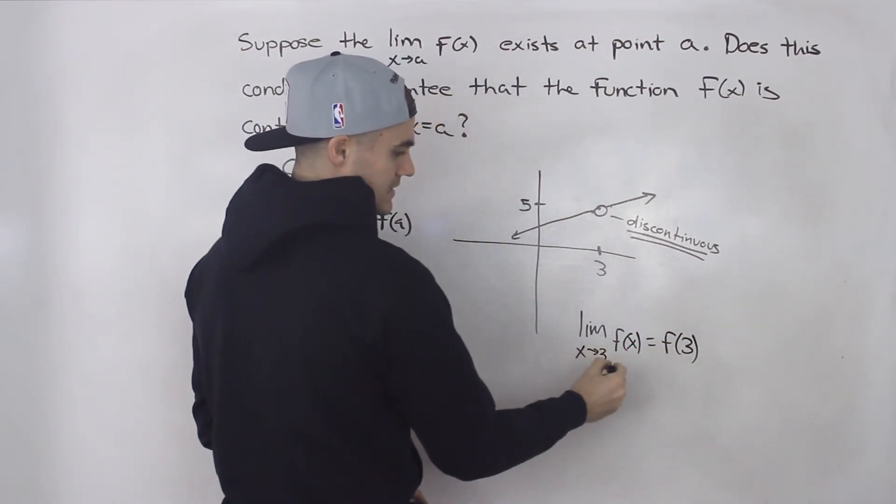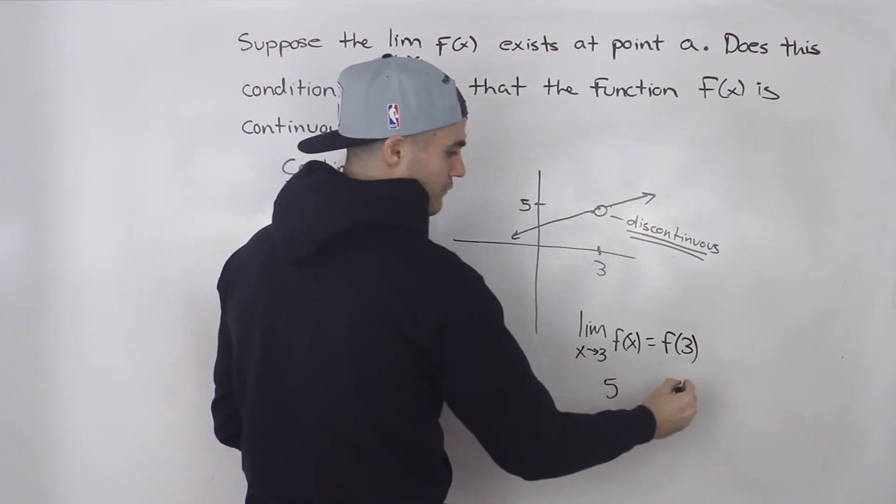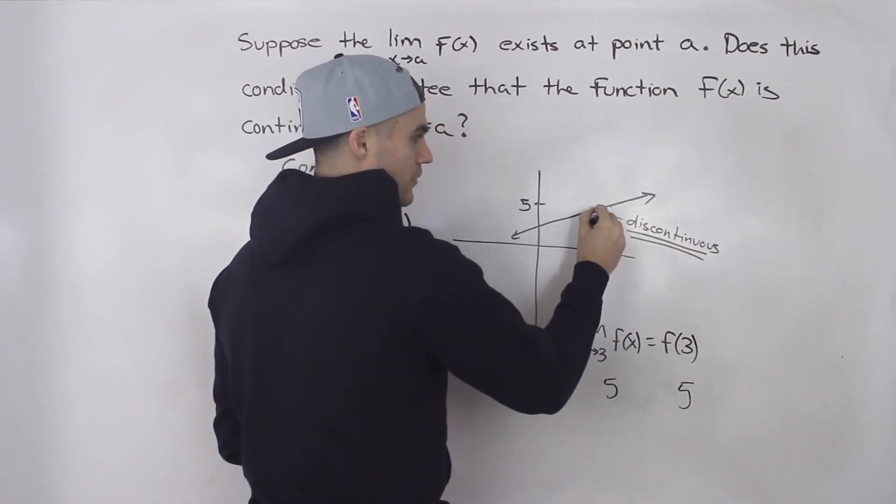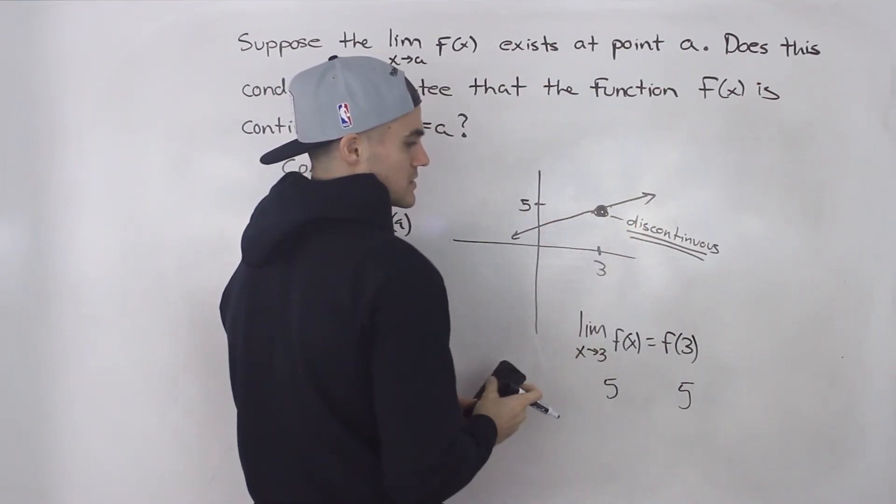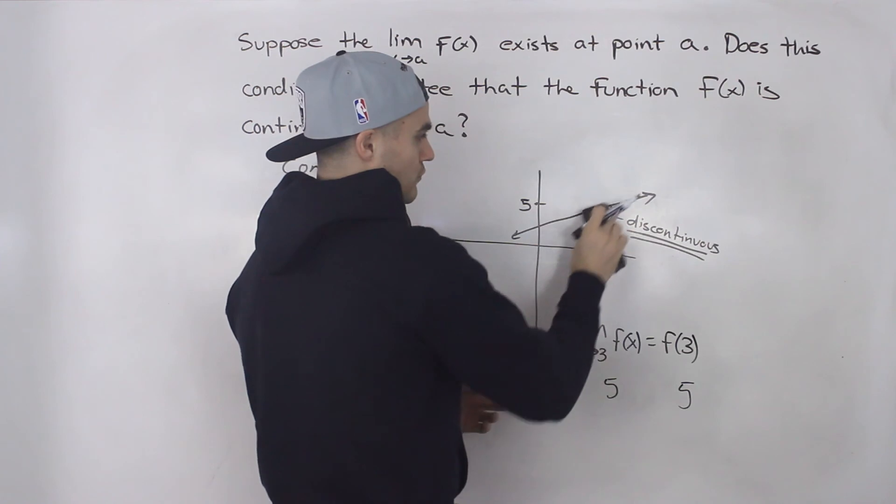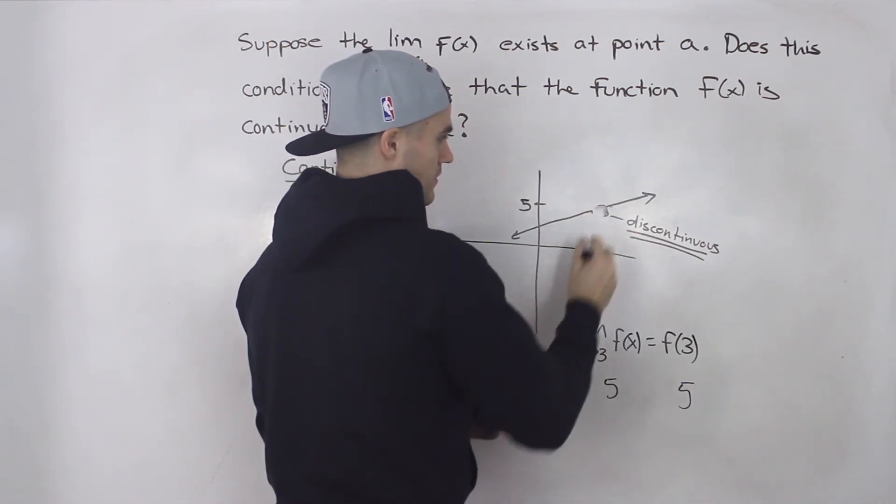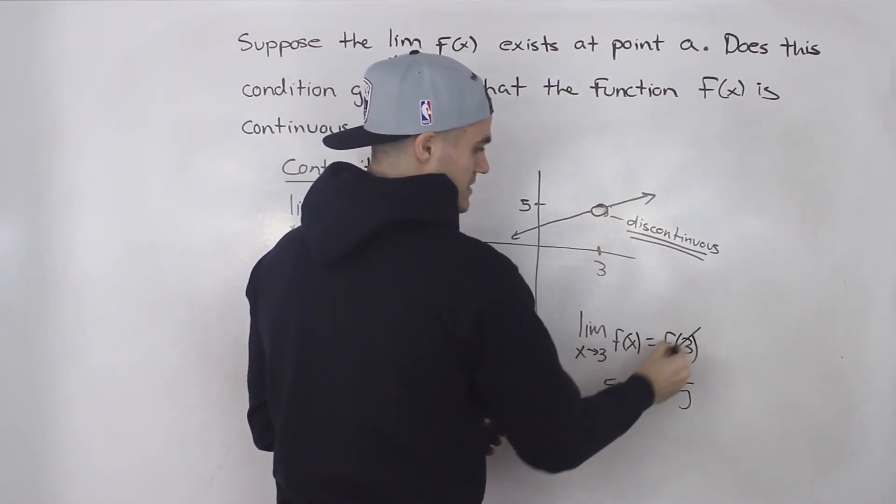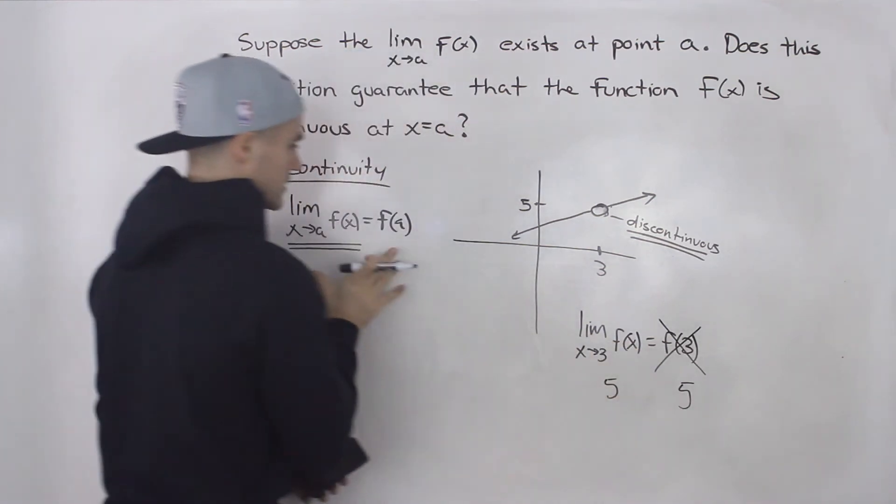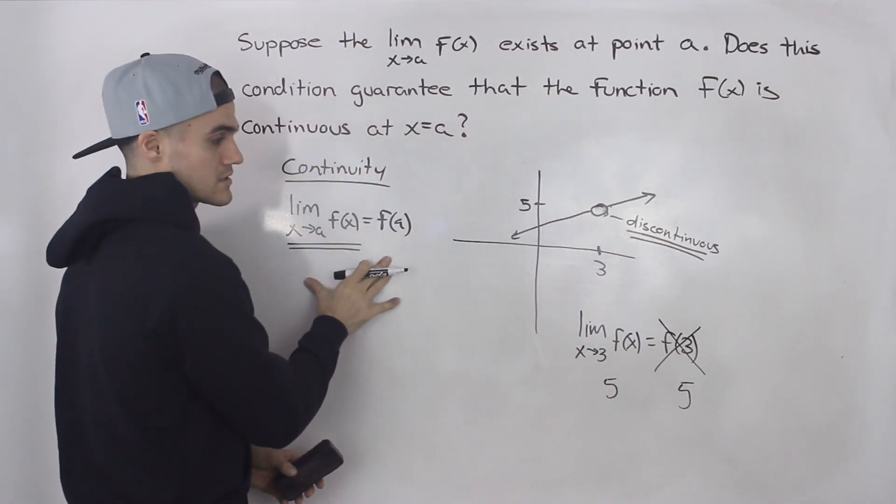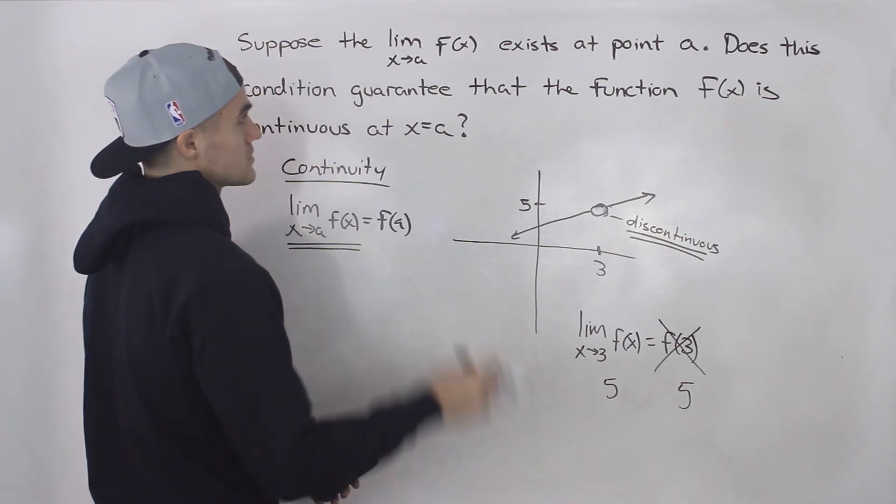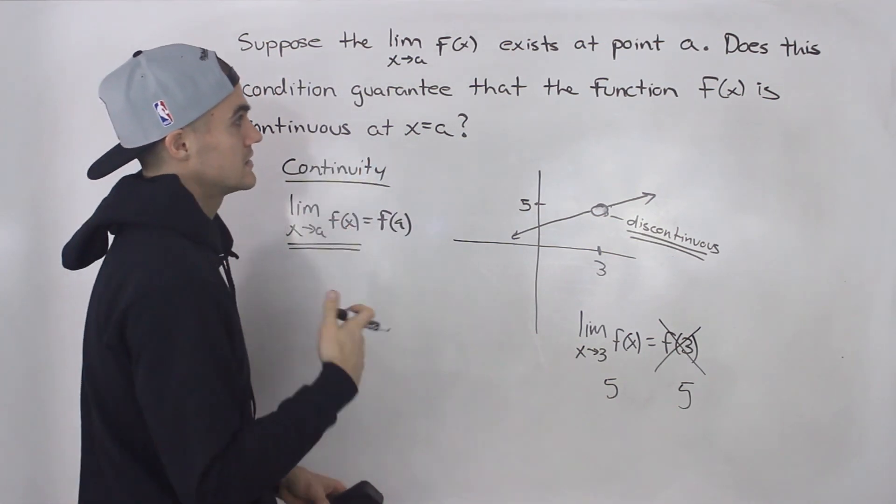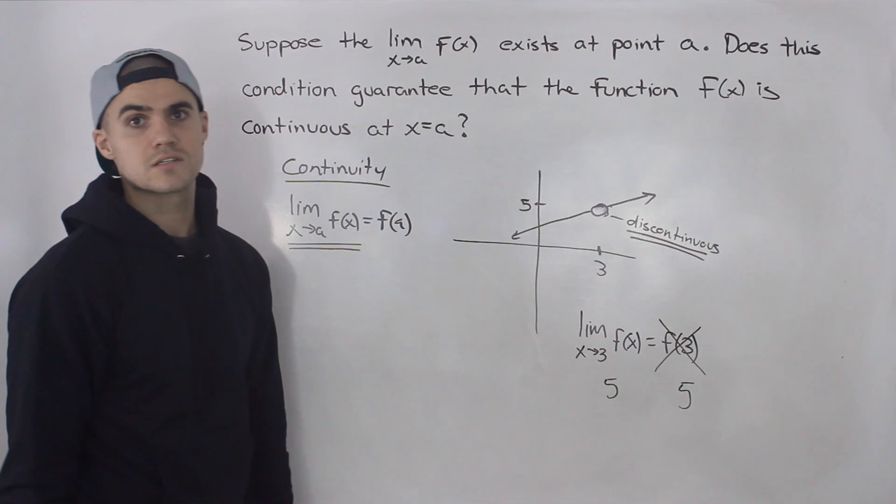And since this limit is equal to five, then f of three has to equal five. And if f of three equals five, then we know there's a solid dot there, which would make the function continuous. However, because f of three does not exist, that right side of this condition is not met. So the function is discontinuous. So just because a limit exists, it doesn't guarantee that the function is continuous.